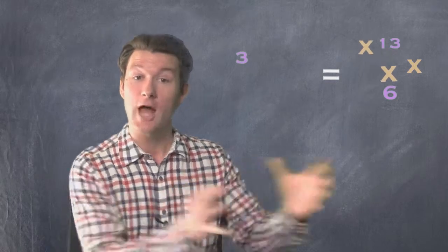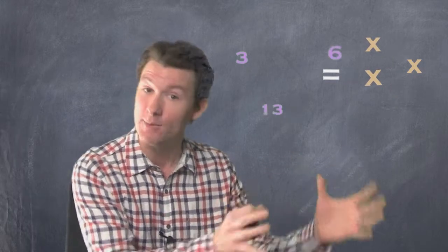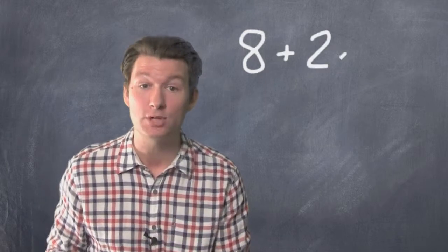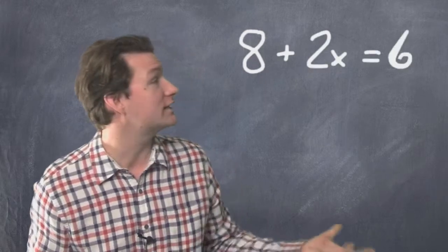What I like to do is move all the variables on one side of the equal sign and keep all the numbers on the other side. I'll give you an example. Let's say we had 8 plus 2x equals 6x.